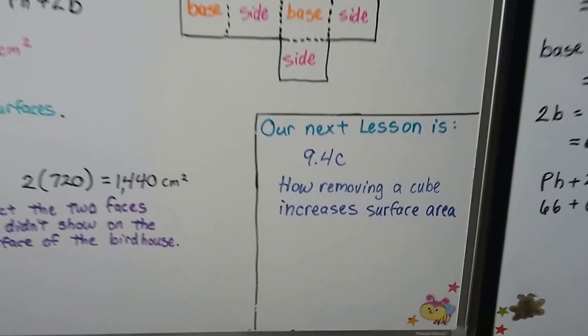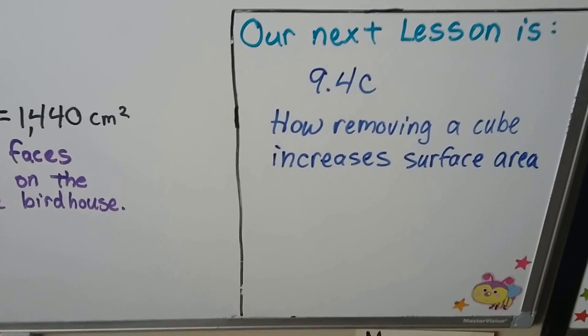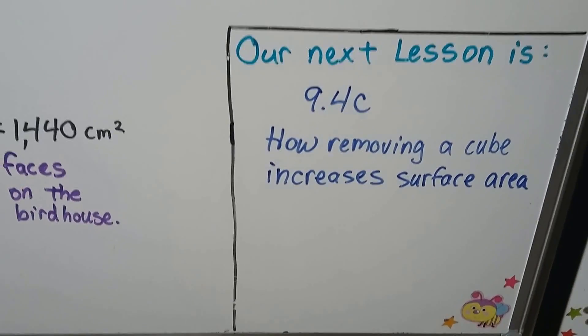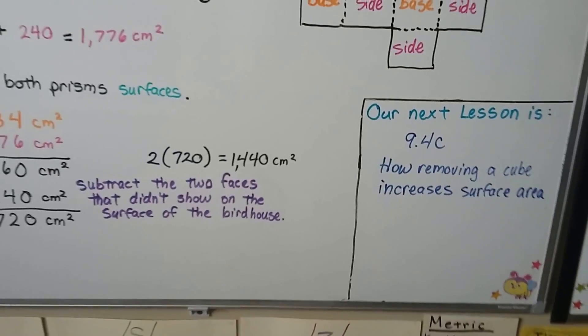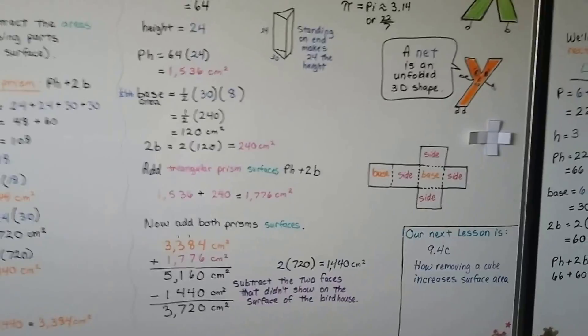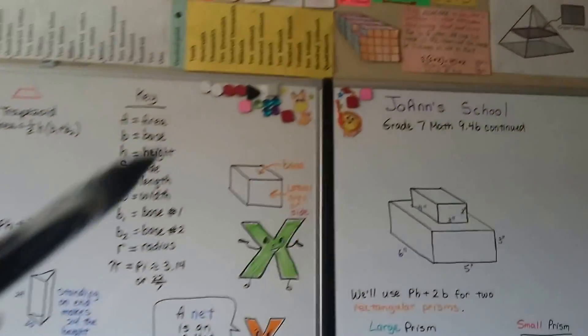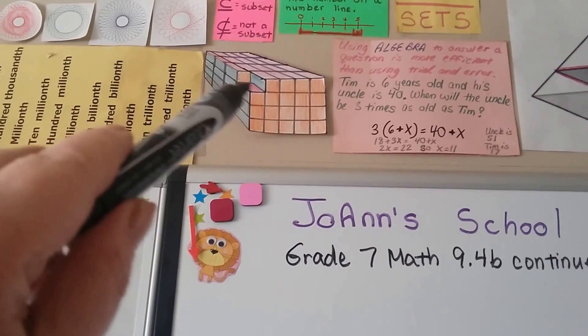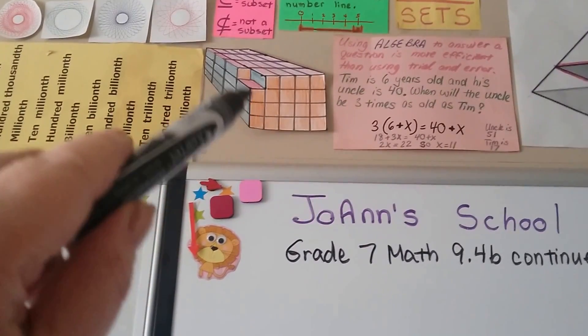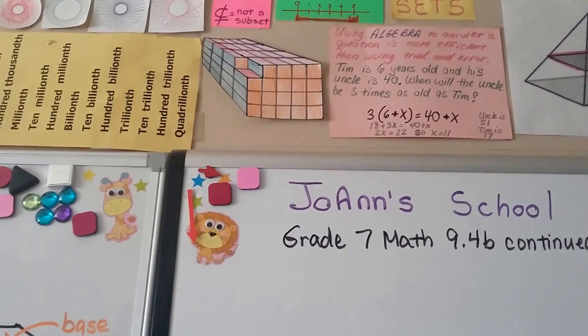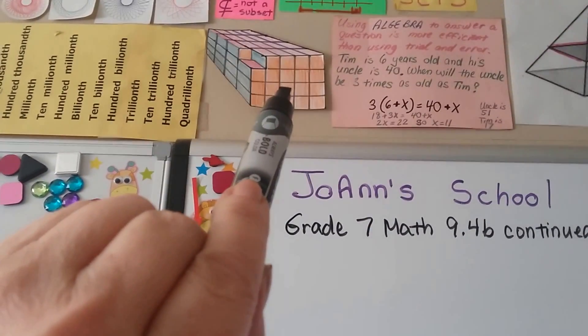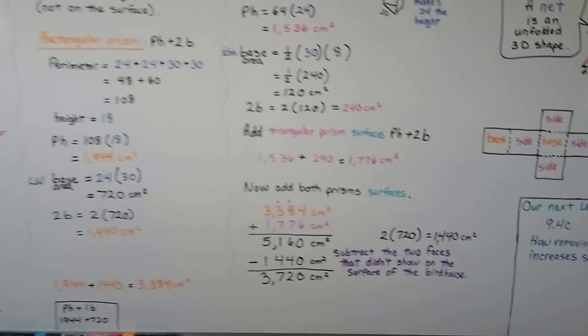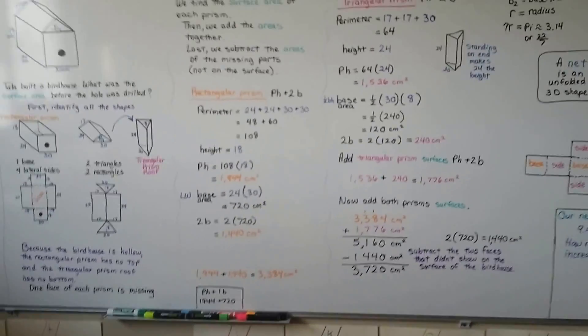Our next video is 9.4c, and I'm going to show you how removing a cube increases surface area. If you popped out a cube from a big pile of cubes at a corner, it wouldn't affect the surface area because there are still three surfaces showing. But if you pulled one out from the middle, it changes things — I'll show you what happens. I hope you're doing well and I'll see you next time. Bye.